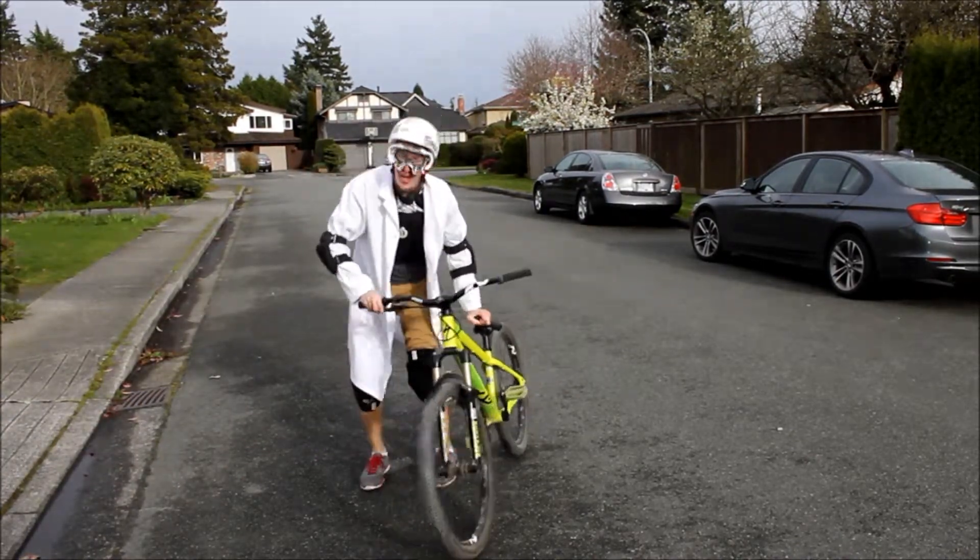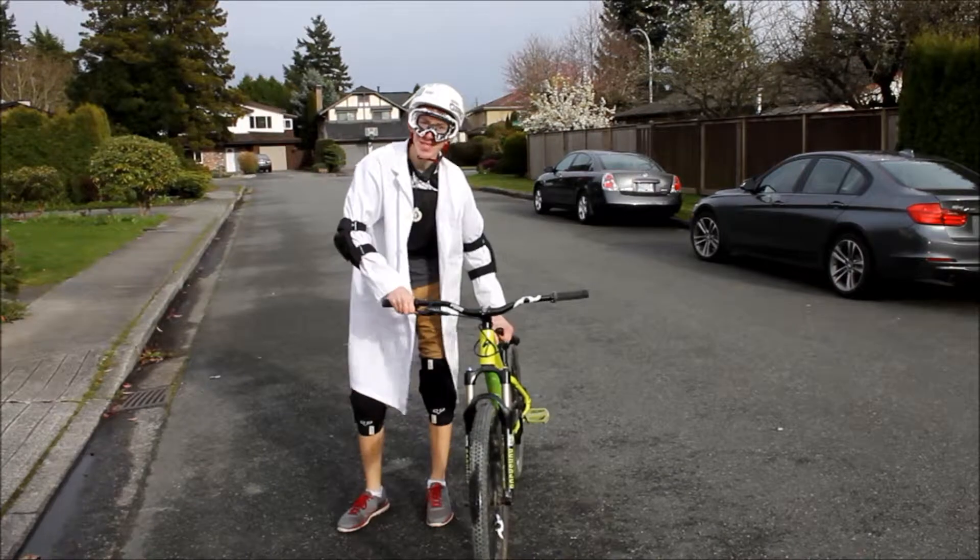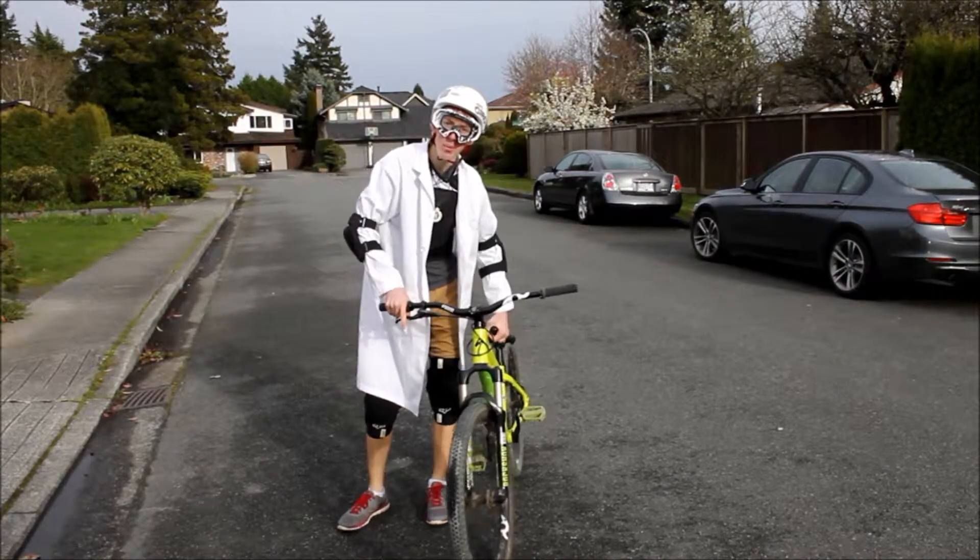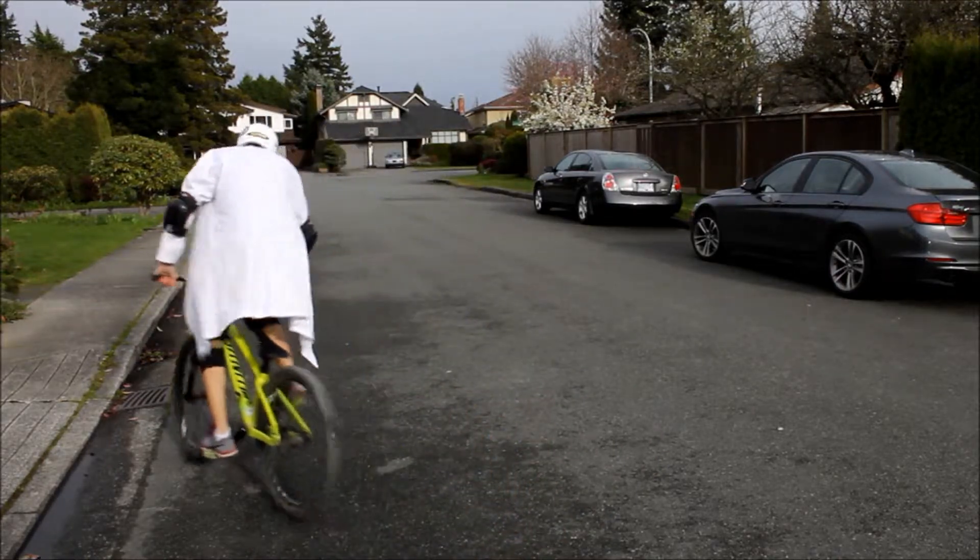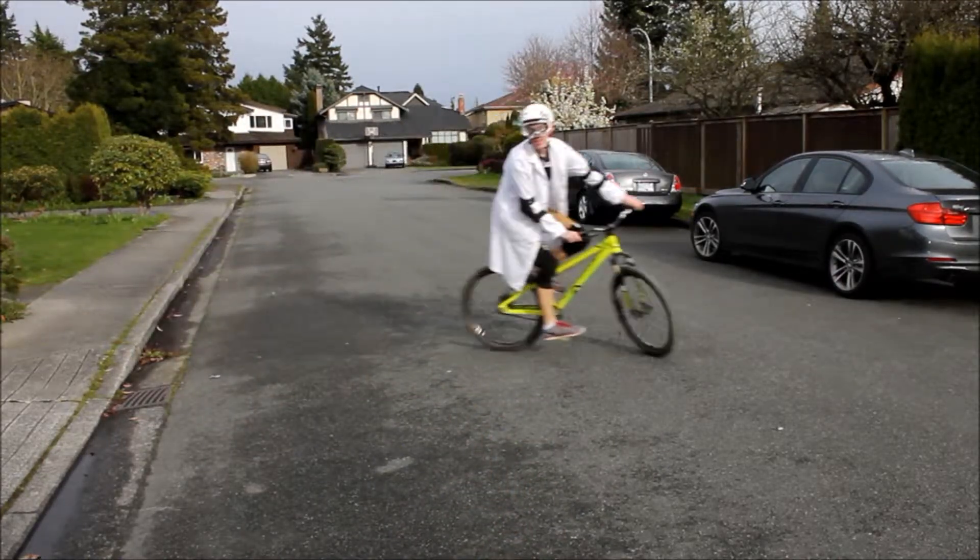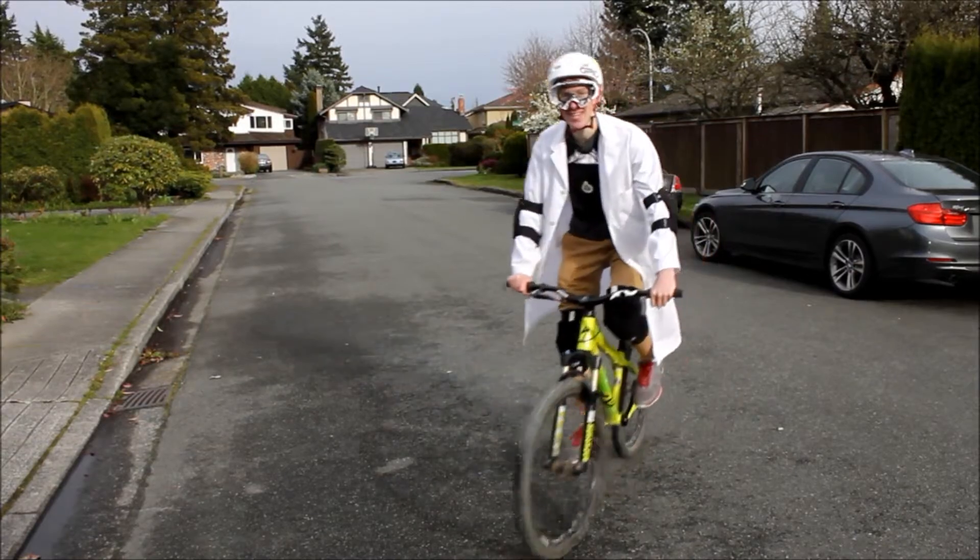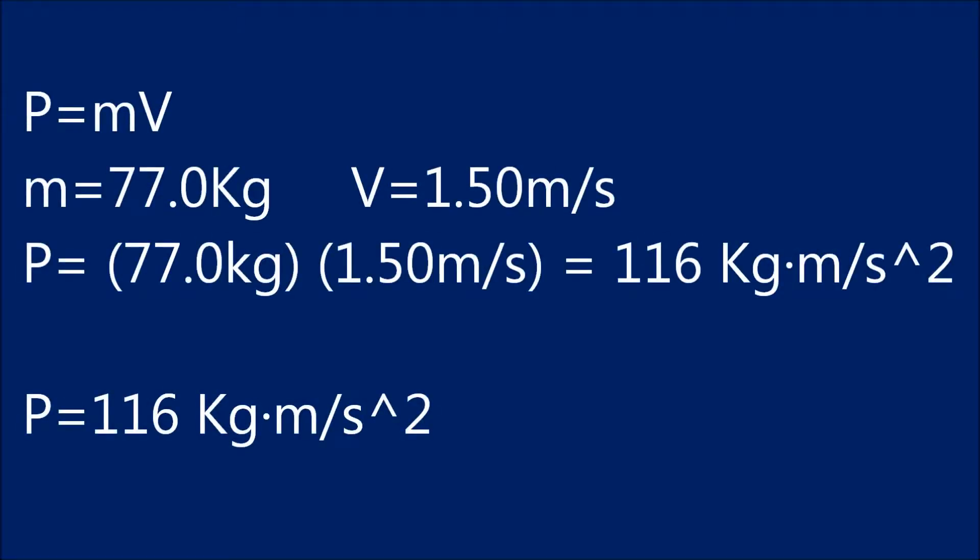If me and my bike have a combined mass of 77 kilograms, and I start pedaling at 1.5 meters per second, then you can calculate my momentum. By plugging in the numbers I mentioned earlier into the momentum formula, we can solve for my total momentum while I was riding at a velocity of 1.5 meters per second. Upon solving it, we can see that I had a momentum of 116 kilograms times meters per second.